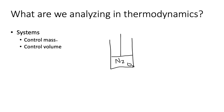Let's think about it first as a control mass. The control mass means that our system is the mass inside the piston-cylinder apparatus — in other words, the gas, the physical stuff, the nitrogen and oxygen. That mass is going to be our system.